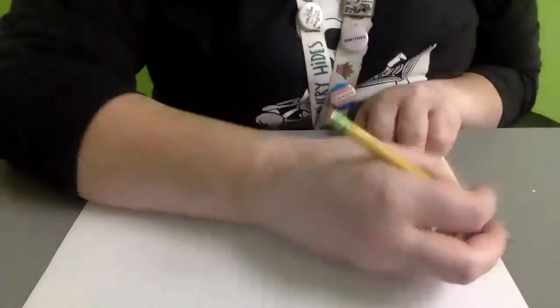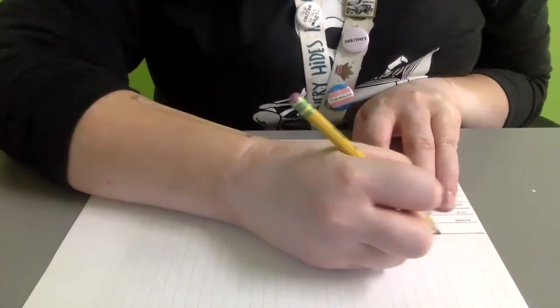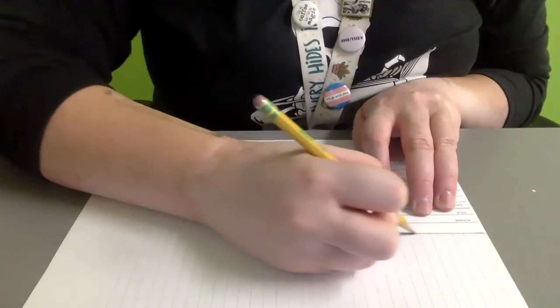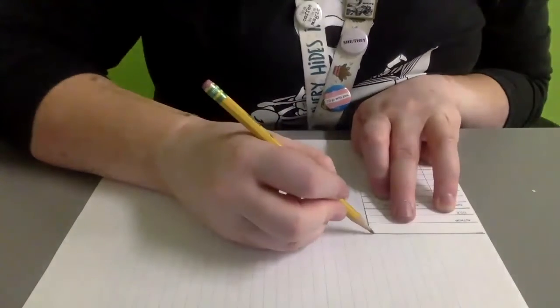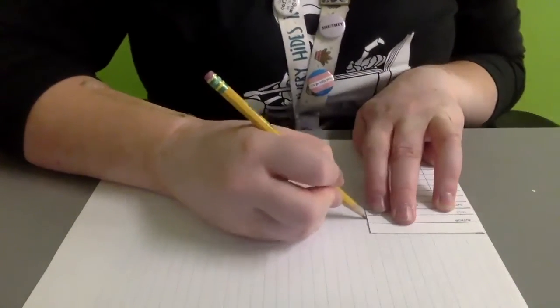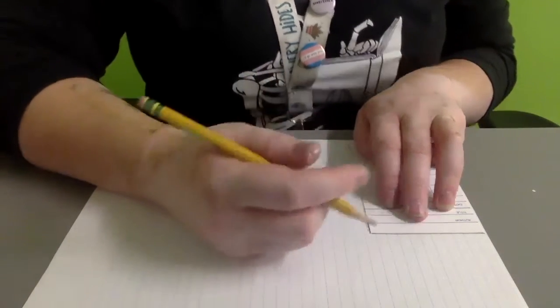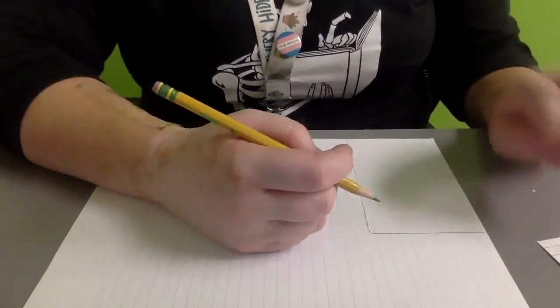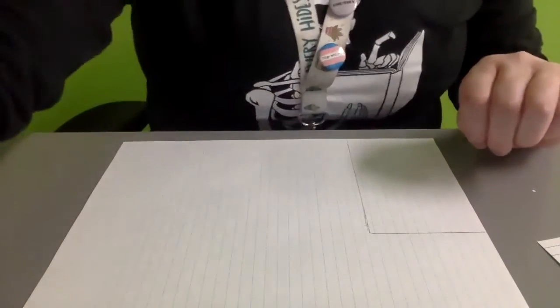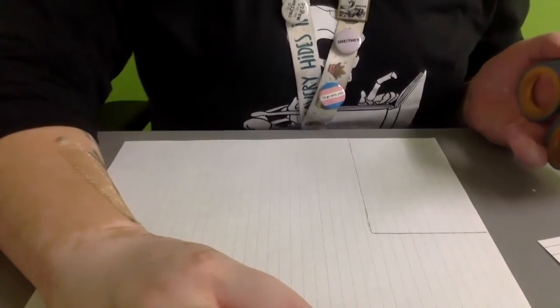So we're just going to use our pencil to trace. What's nice with the long paper is it also helps you have your own kind of grid. So we have that all traced and now we're going to cut that to size. So I'll be right back with our cut to size paper.